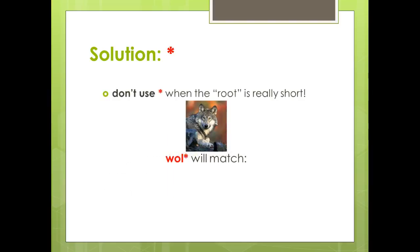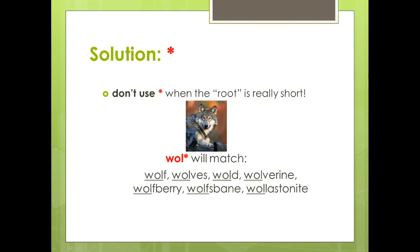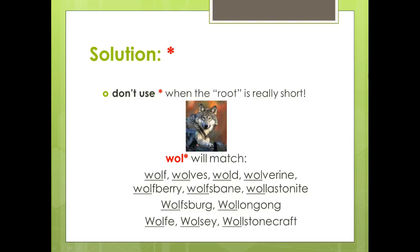The only thing you want to keep an eye on is that this doesn't work very well when the root part of your word is really short. For example, if you were doing research on wolves you wouldn't want to type in w-o-l asterisk, because in addition to wolf and wolves you'd also get matches on words like wolverine, wolf spain, as well as places and people's names.